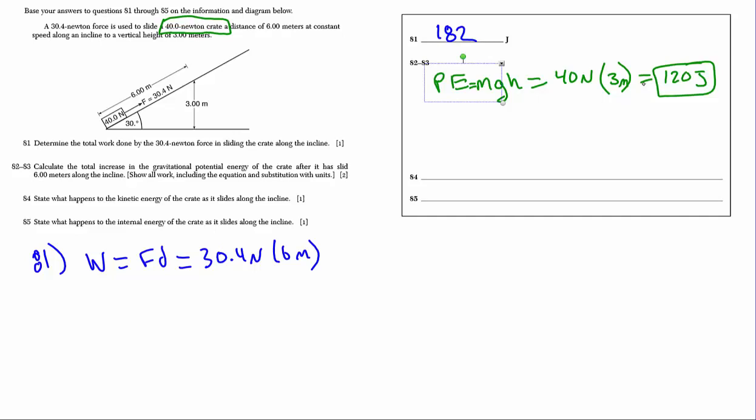84. We want to know what happens to the kinetic energy the crate has as it slides along the incline. A key thing here is to read the words constant speed, constant speed. A lot of students want to say the kinetic energy decreases, but it doesn't. It's actually going to stay the same. It remains constant. You don't need to explain why. In fact, I'd almost encourage you not to. That way, if you're wrong, you don't lose a point. I've just got to say that constant or kinetic energy is the same or remains the same.